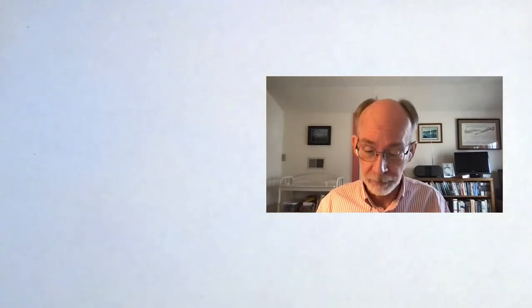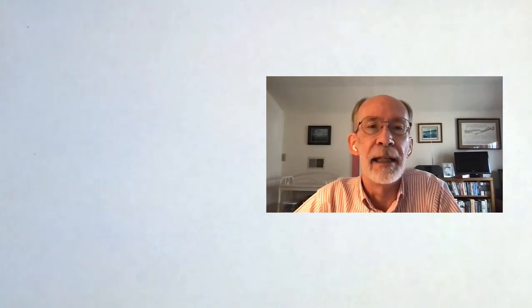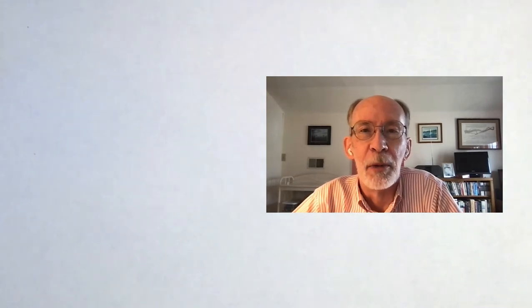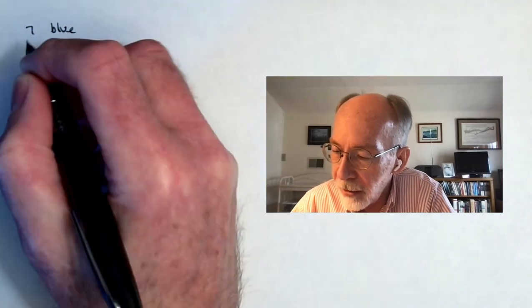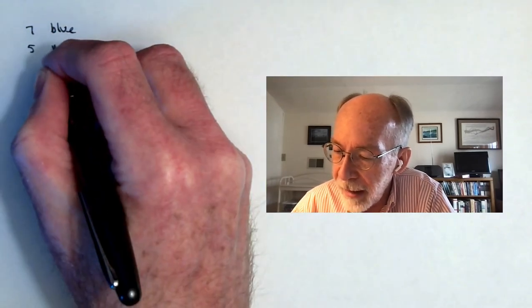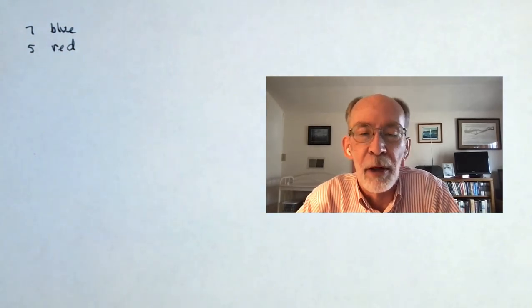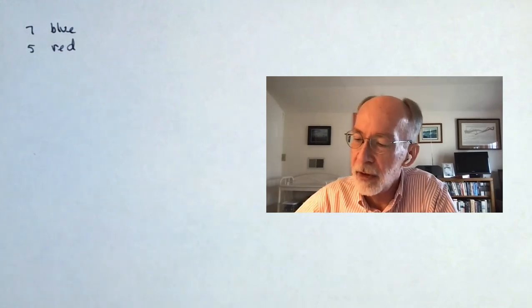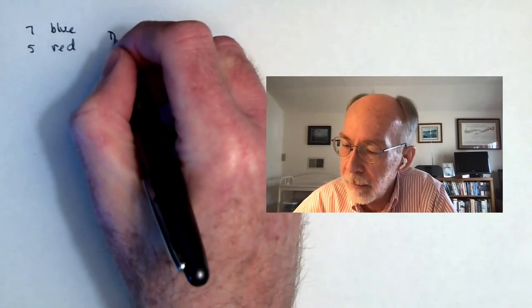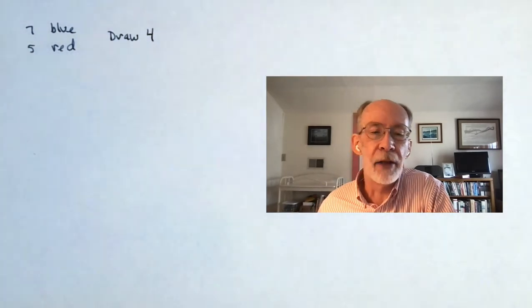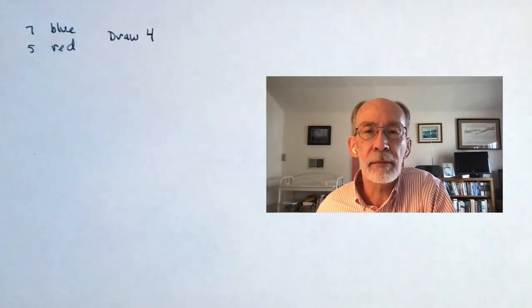We're going to imagine that we have some objects in a container. It's sort of traditional in the world of probability to call it an urn. You can think of it as a bucket, whatever you like. We are going to imagine that we have seven blue balls, marbles, whatever you want, and five that are red. It doesn't much matter what they are. It just matters that seven of them are blue and five of them are red. And we're going to reach in and we're going to draw four of them. And we're going to ask, what's the probability that we end up with one blue one and three red ones?